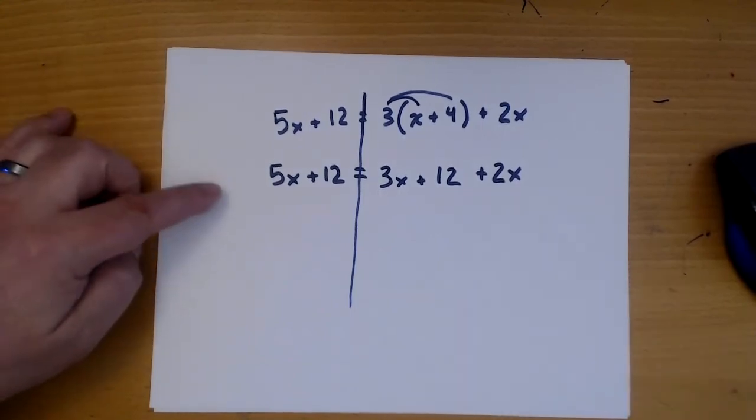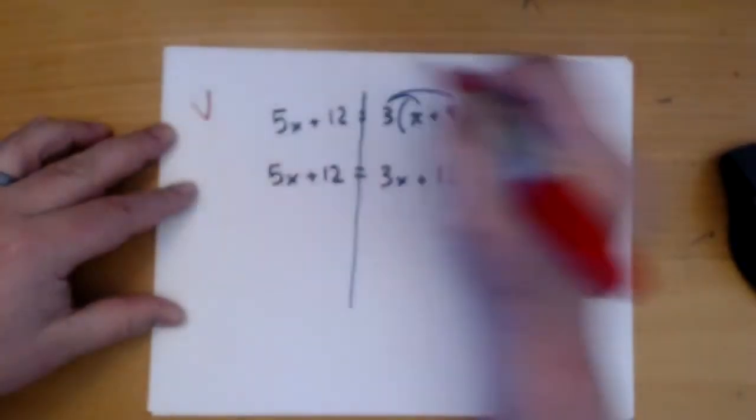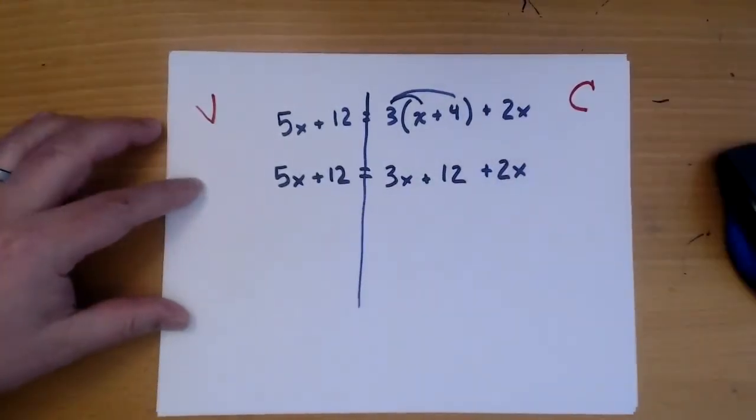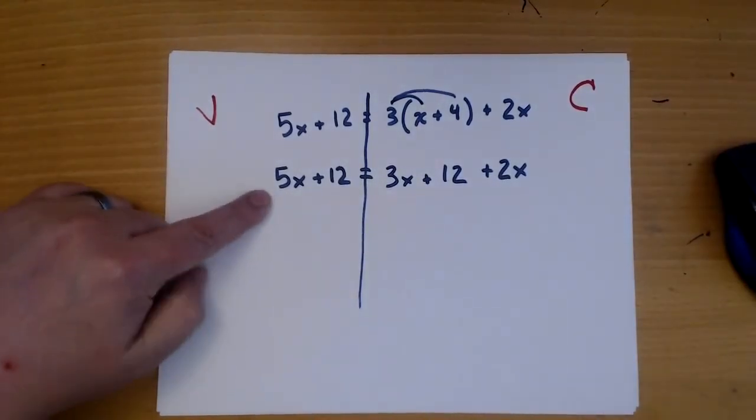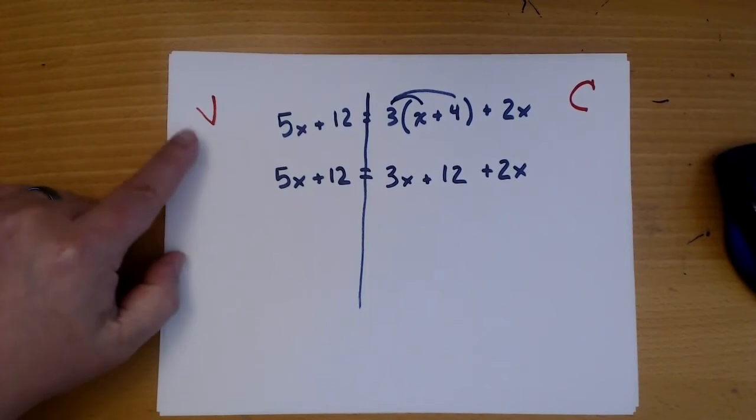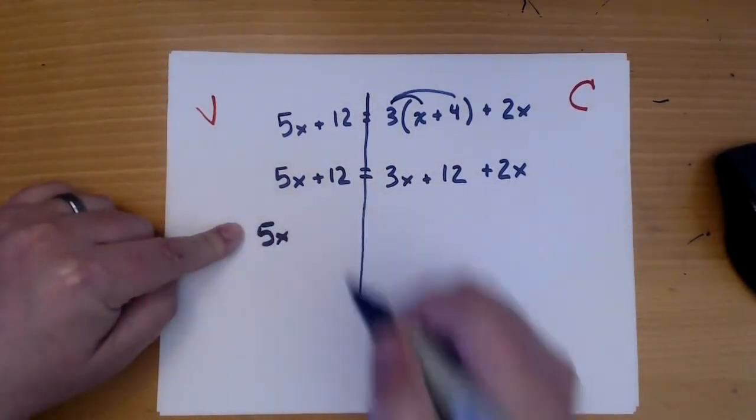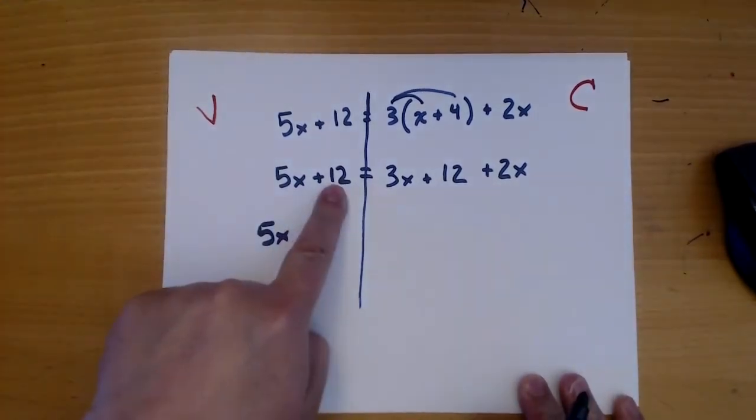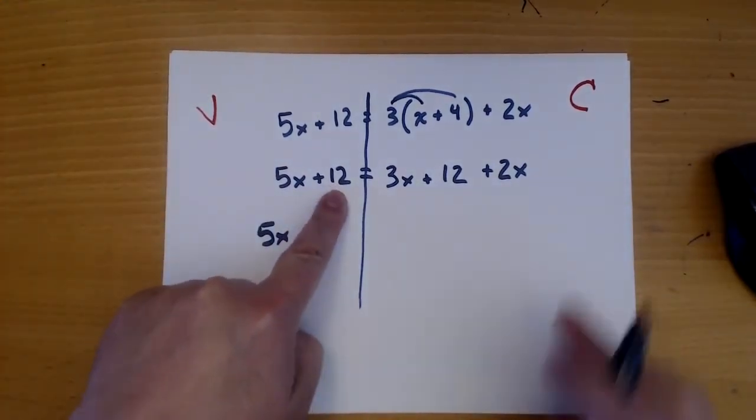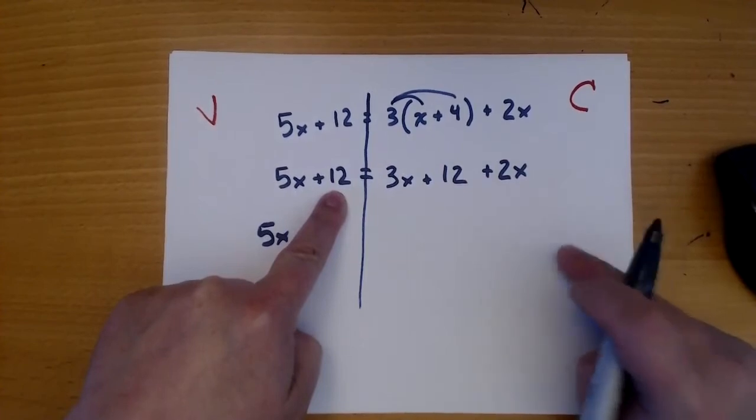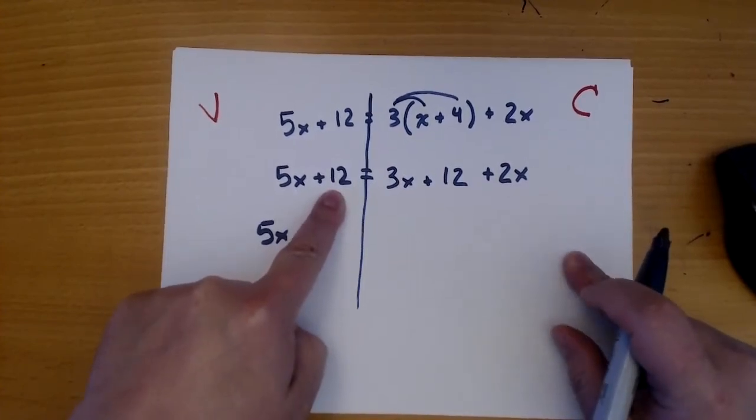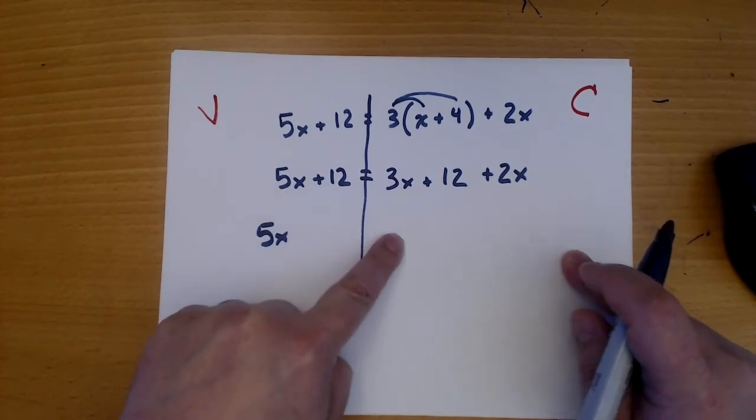Now remember, we want all of our variables here and all of our constants here. So 5x is a variable. It's okay over here. This is the variable side, so we just copy it down. This 12 is not a variable. It's a constant. It belongs over here, so we move it. And when it crosses the line, it changes sign.